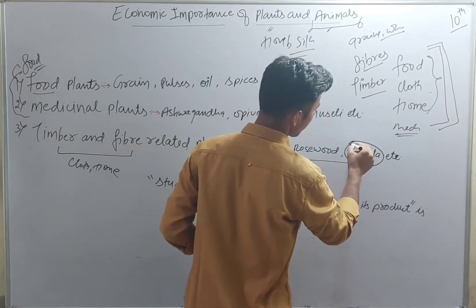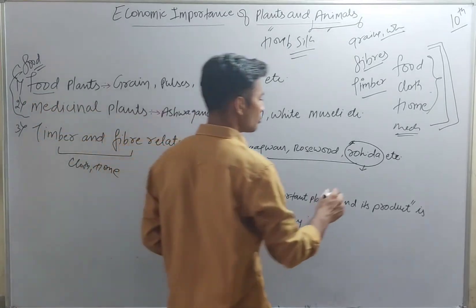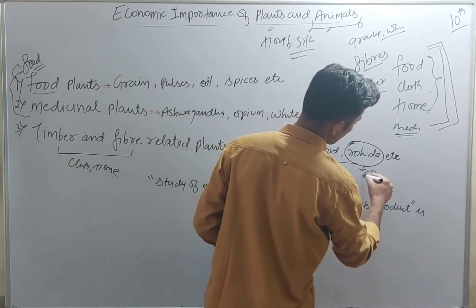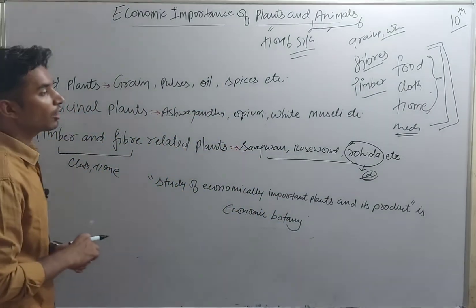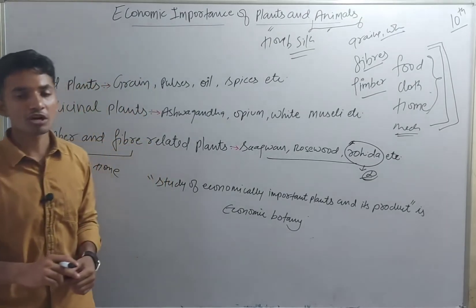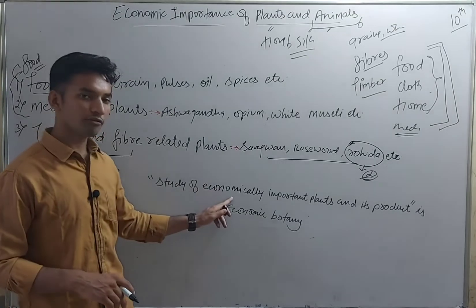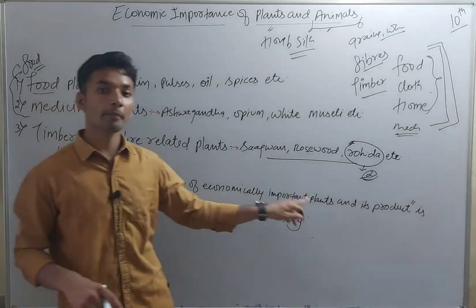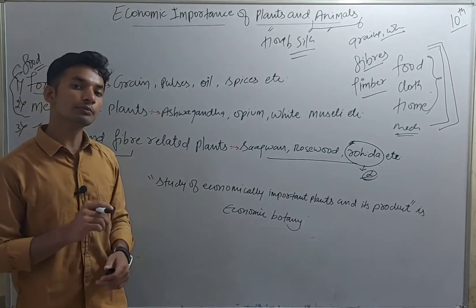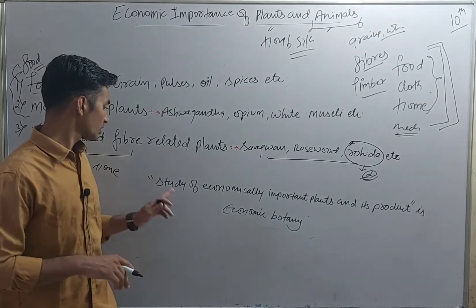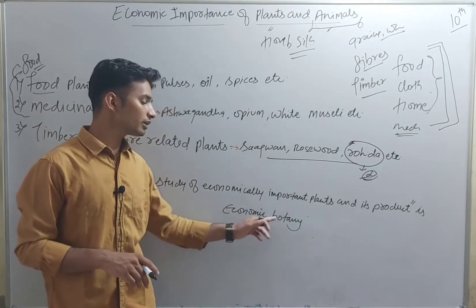Rohida is famous in Rajasthan — it is considered the state tree of Rajasthan. Now, there is a term called economic botany. Economic botany is the study of economically important plants and their products.